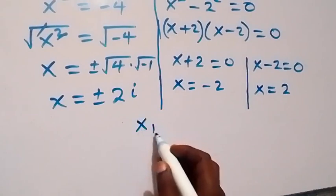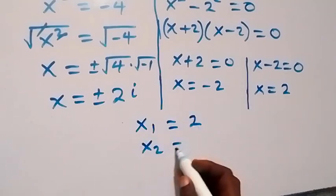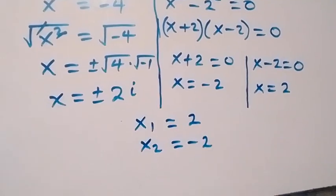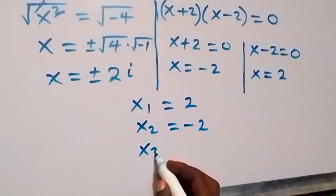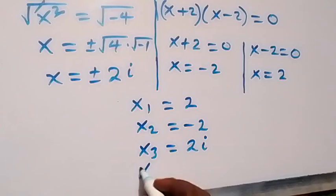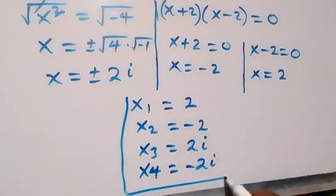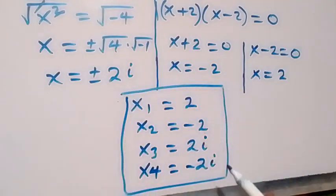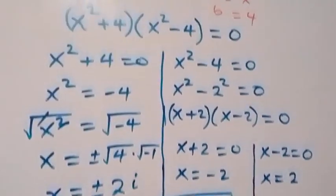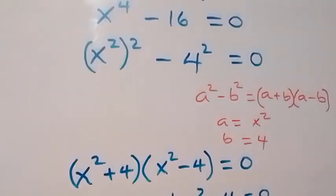Altogether this gives us four solutions. The first one: x₁ equals 2. Then x₂ equals minus 2. Then x₃ equals positive 2i, and the last one x₄ equals minus 2i. So altogether we have four solutions — two real solutions and two complex solutions. Thank you for watching, subscribe to my channel and turn the notification bell on. See you next class, bye for now.